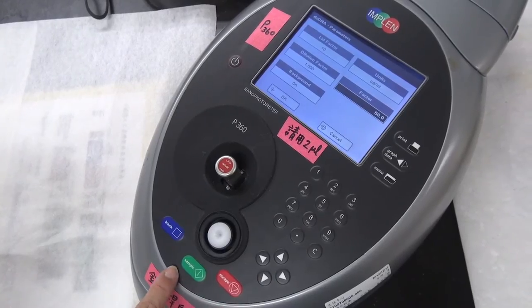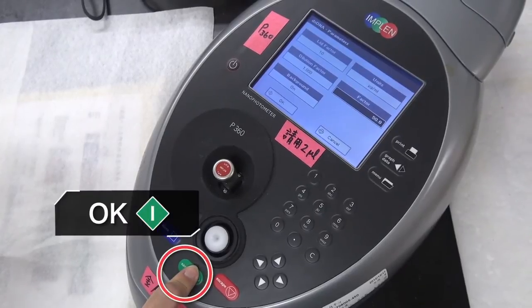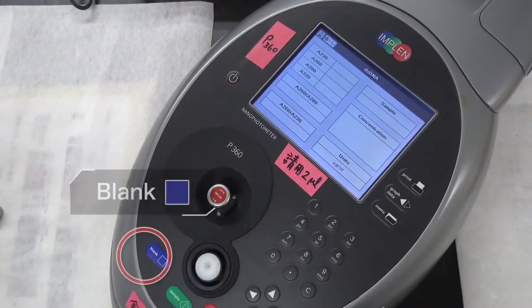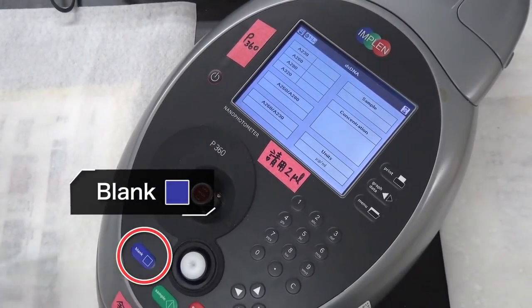9. After finishing the parameter setup, press OK to enter the measurement interface. 10. Press blank or reference to zero the machine.